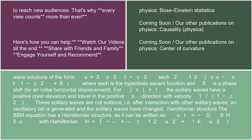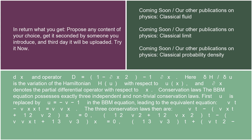Hamiltonian structure: the BBM equation has a Hamiltonian structure, as it can be written as u_t = -D(δH/δu), with Hamiltonian H = ∫[-∞,+∞](1/2·u² + 1/6·u³)dx and operator D = (1 - ∂_x²)^(-1)∂_x. Here δH/δu is the variation of the Hamiltonian H[u] with respect to u(x).